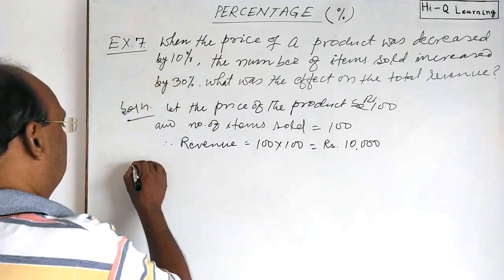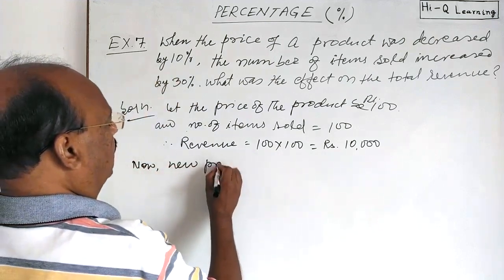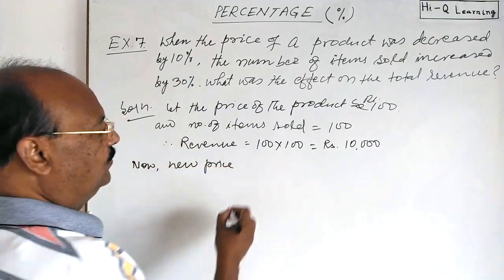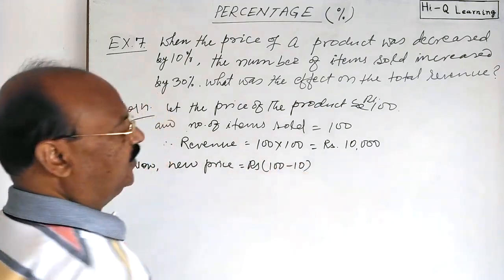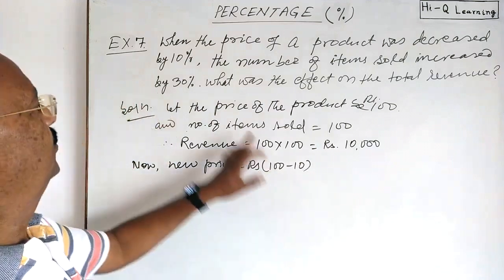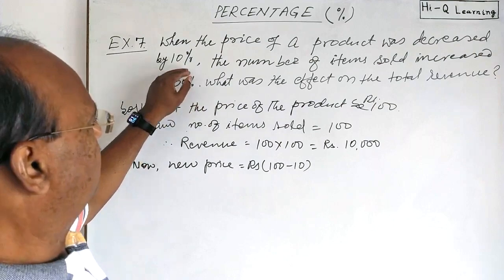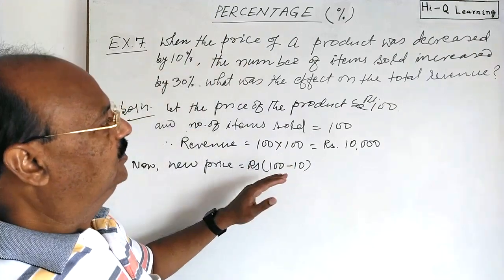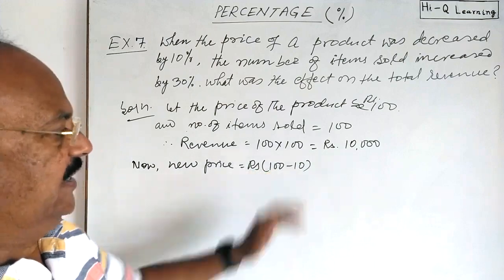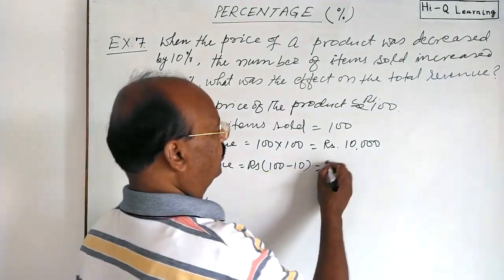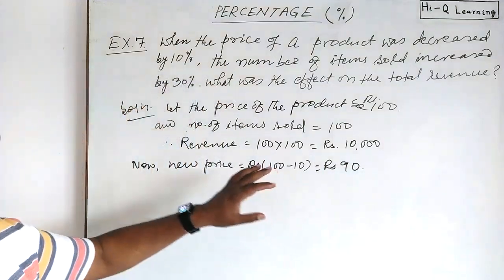Now there is some change — price decreases by 10 percent. The new price will be rupees 100 minus 10. We are taking 100 here so there is no need to calculate percentage separately. So simply, 100 minus 10 gives us rupees 90 as the new price.